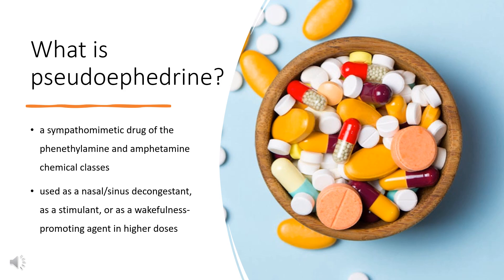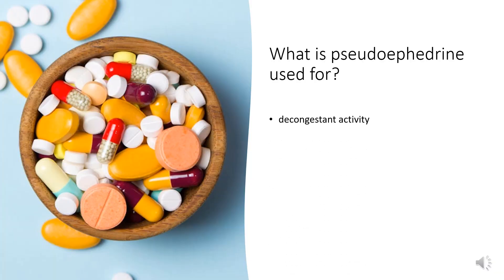Pseudoephedrine is a sympathomimetic drug of the phenethylamine and amphetamine chemical classes. It may be used as a nasal/sinus decongestant, as a stimulant, or as a wakefulness-promoting agent in higher doses. It was first characterized in 1889 by the German chemists Leidenberg and L. Schlegel, who used a sample isolated from Ephedra vulgaris by the Merck Pharmaceutical Corporation of Darmstadt, Germany.